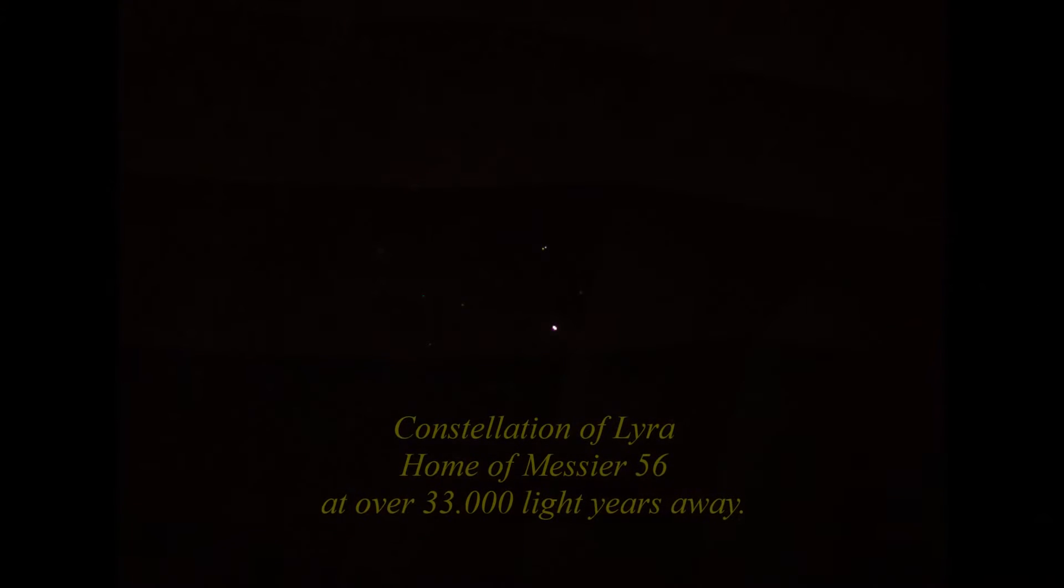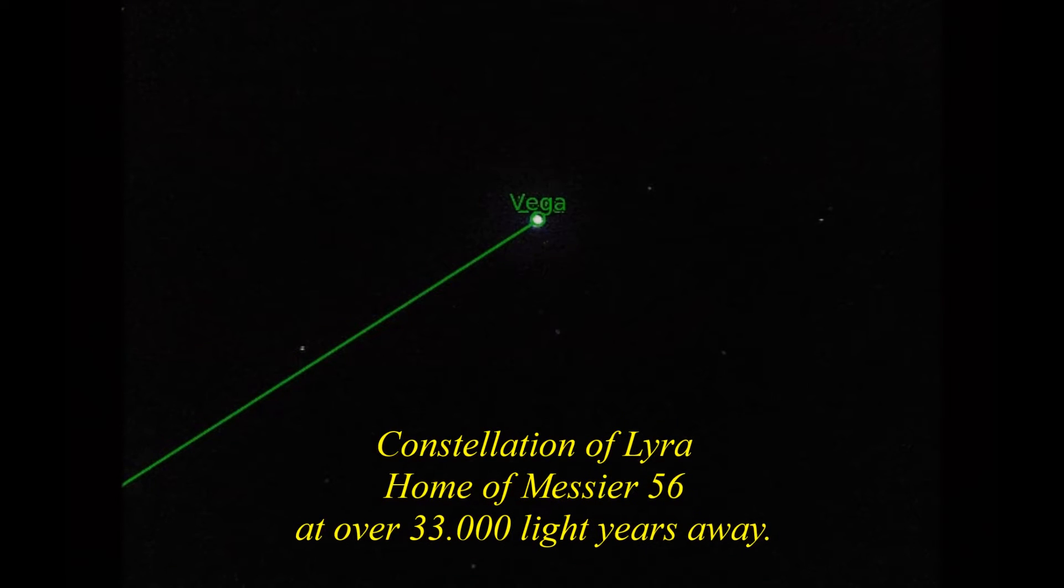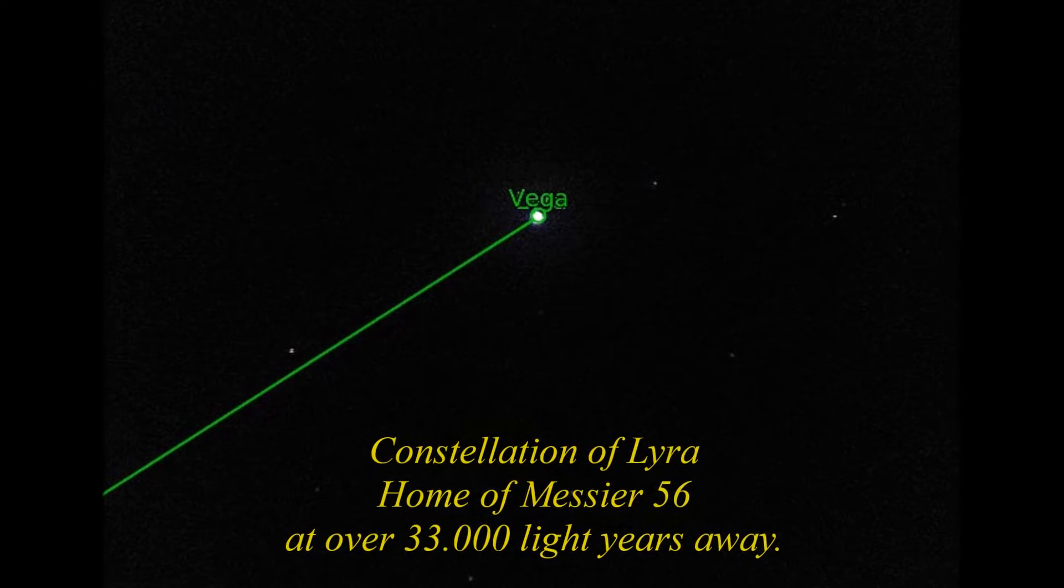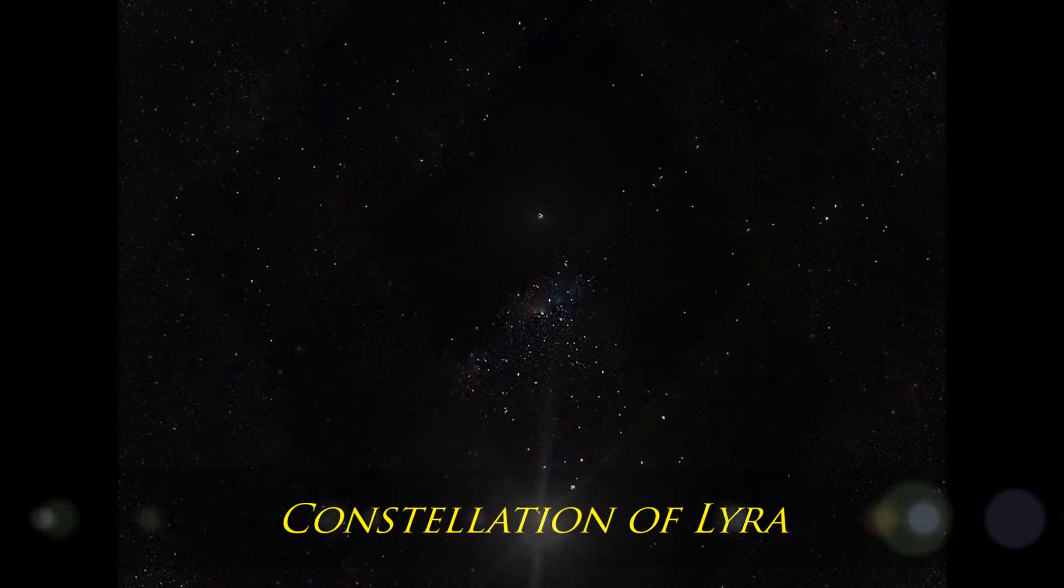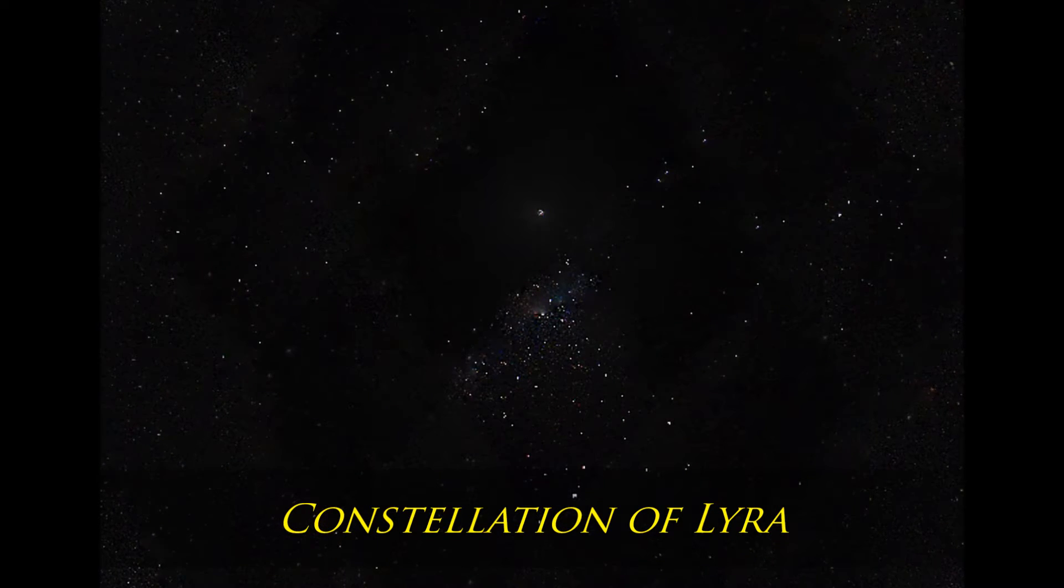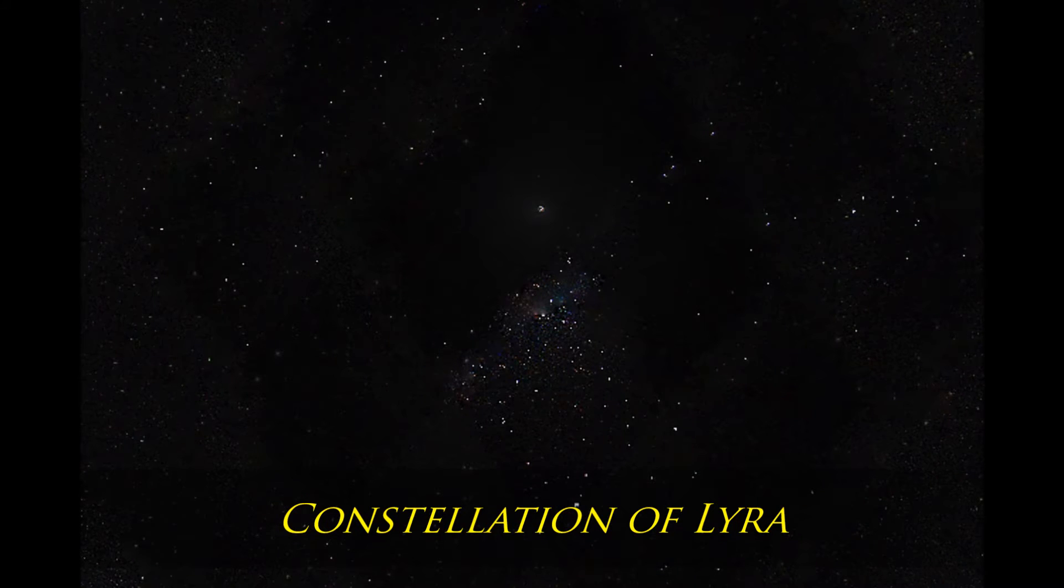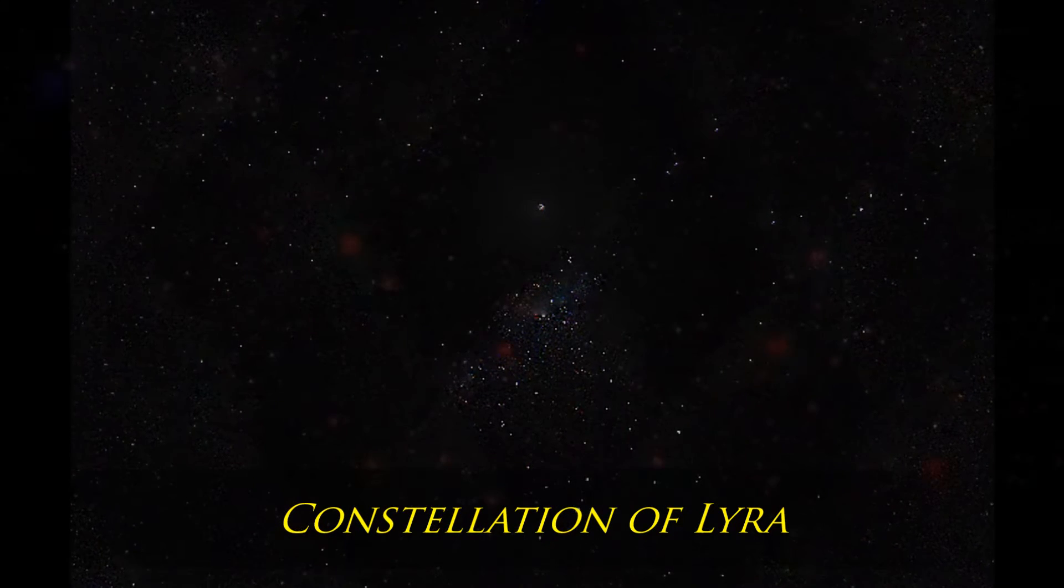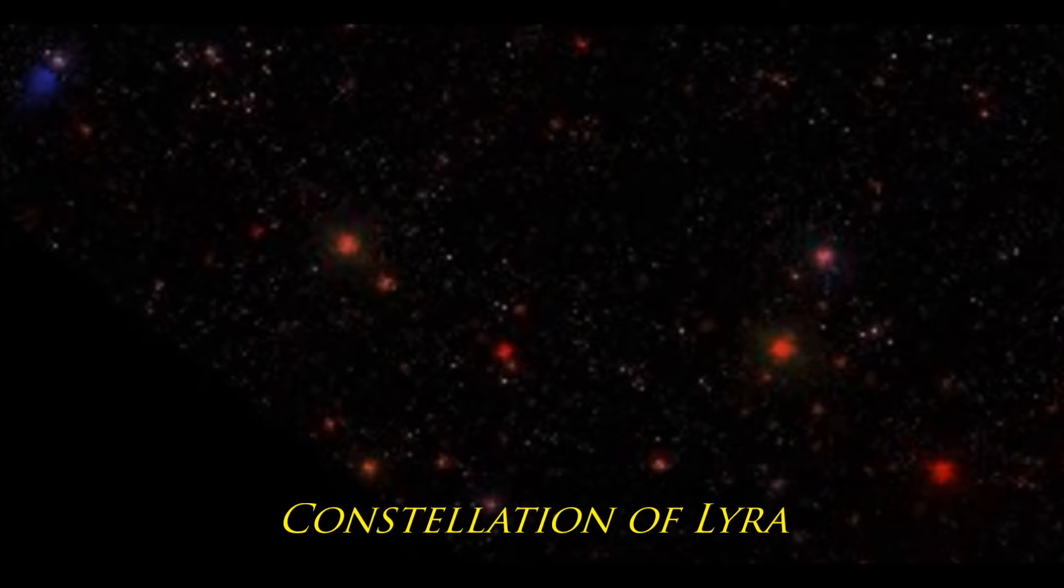Beta Lyrae is the prototype of a class of stars known as Beta Lyrae variables. This is so interesting. These binary stars are so close to each other that they become egg-shaped and material flows from one to the other. Epsilon Lyrae, known informally as the Double Double, is a complex multiple star system. Lyra also hosts the Ring Nebula, the second discovered and best known planetary nebula.